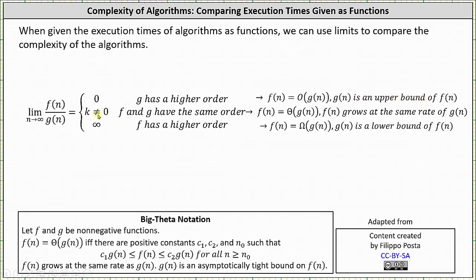If the limit doesn't equal zero but is finite, then the two functions have the same order, and we can state that f of n is Big Theta of g of n, meaning f of n grows at the same rate as g of n. If the limit approaches infinity, then f of n — the function in the numerator — has a higher order, and we can state that f of n is Big Omega of g of n, indicating g of n is a lower bound of f of n.